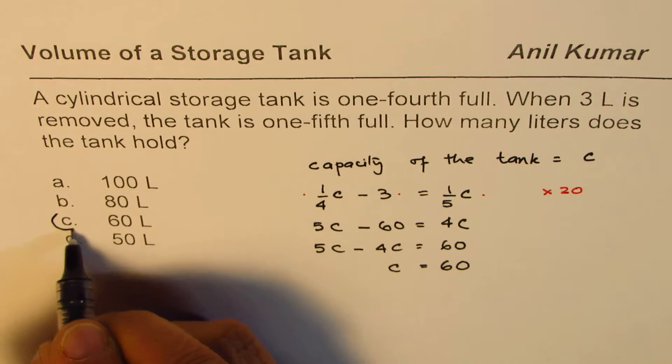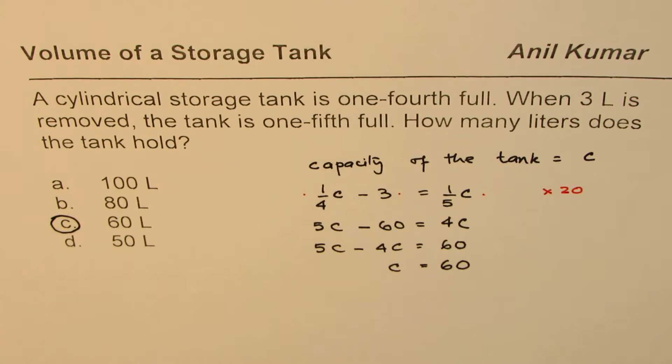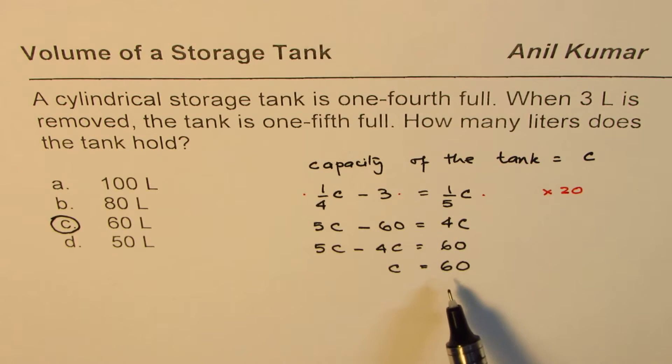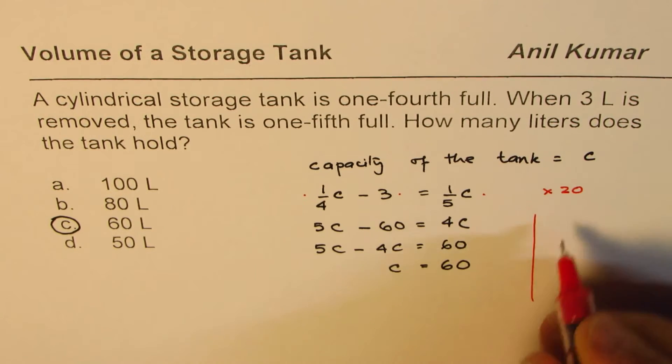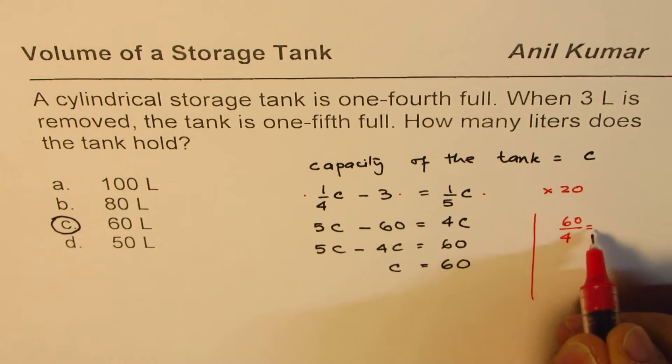You can also verify your solution. Take 60 as a full capacity. One-fourth of 60 is what? One-fourth of 60 is 60 divided by 4, which is 30. Half of 30 is 15.